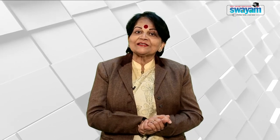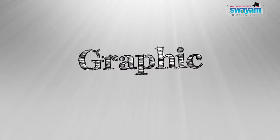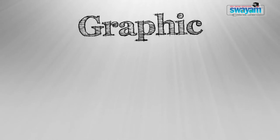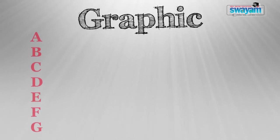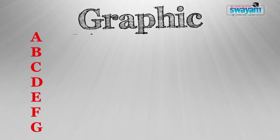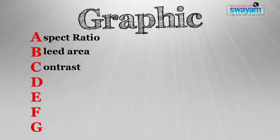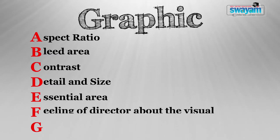Whatever graphic you are using, the director and teacher must evaluate the suitability and effectiveness of each specific visual. Guidelines that can help, and which can be memorized easily, are A, B, C, D, E, F, G: A stands for aspect ratio, B for bleed area, C for contrast, D for detail, E for essential area, F for feeling of director, and G for glare.